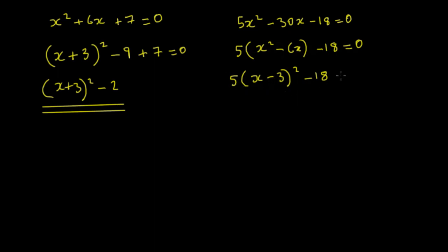So in order to get that correct, we're going to have to take that 45 away, and that equals 0. So we're going to be left with 5 times x minus 3 all squared, and that will be minus 63 equals 0. So there's an extra little step in that one.